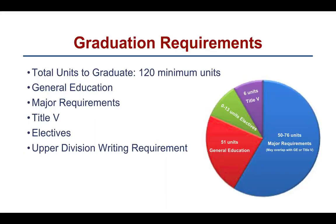Students must also have upper division writing skills completed — pass the upper division writing examination depending on major, or pass their writing course with a grade of C or higher. Students must also have their residence units completed. A minimum of 30 units must be taken in residence with at least 24 upper division, 12 in the major, and 9 in general education. A minimum of 40 upper division units and a GPA of 2.0 or higher in the three areas of their major, all Fresno State coursework, and total cumulative units.